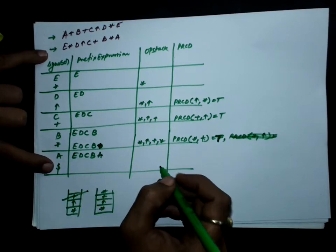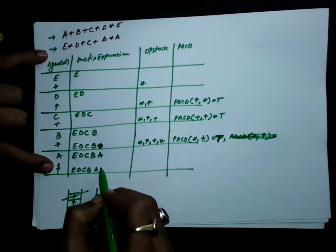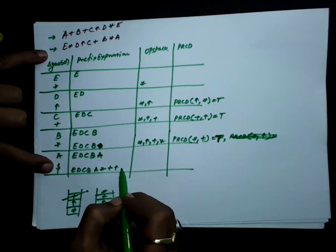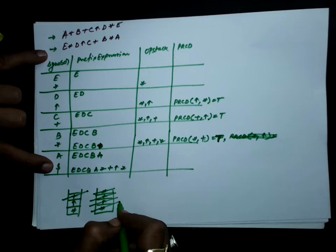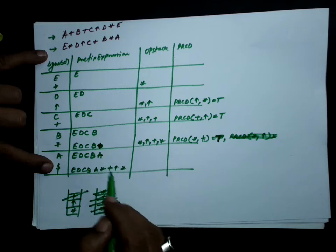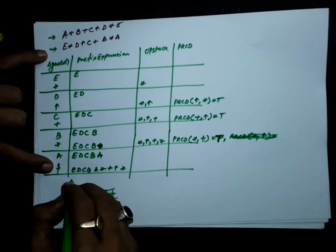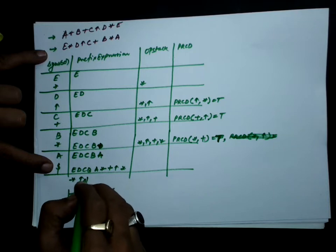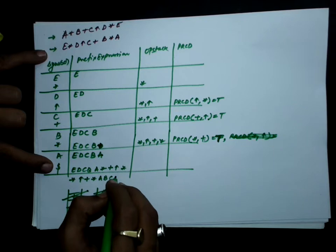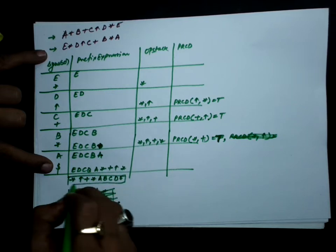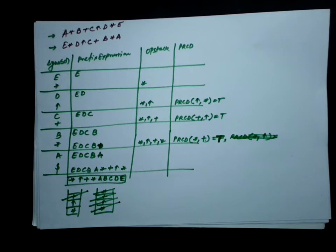Dollar sign means no more input. Pop the symbols one by one from the stack: multiplication, plus, exponent, and multiplication, adding each to the prefix expression. Then reverse this expression. The final result is: multiplication, exponent, plus, multiplication, a, b, c, d, e. This is the prefix equivalent of the given infix expression.